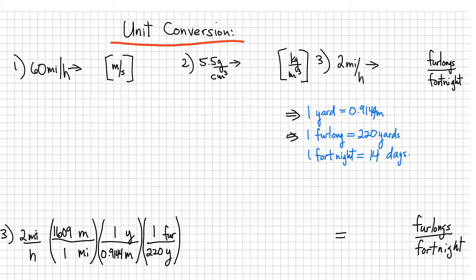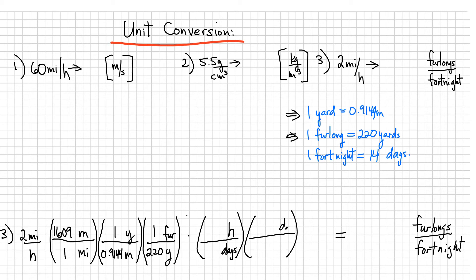This takes me from miles all the way to furlongs. Now I still need to convert hours to fortnights, so I multiply by additional brackets for the time units. I need to eliminate hours, so I put hours in the numerator and go to days first. In one day there are 24 hours, and one fortnight equals 14 days. Multiplying through the entire thing, I get 5,375 furlongs per fortnight.